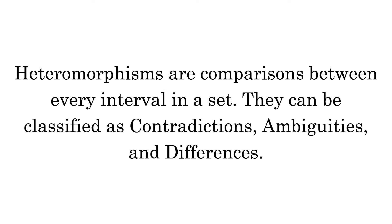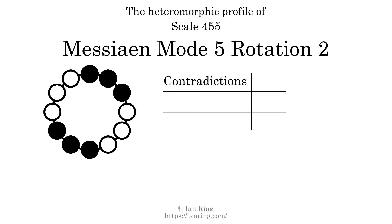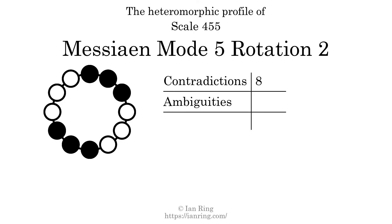Heteromorphisms are comparisons between every interval in a set. They can be classified as contradictions, ambiguities, and differences. A contradiction exists when a small generic interval has a bigger specific size than a larger generic interval — for example, if a generic third interval has a larger size in semitones than a generic fourth interval. The number of contradictions in this scale is 8. An ambiguity exists when 2 intervals have the same specific size but different generic intervals. The number of ambiguities in this scale is 0.